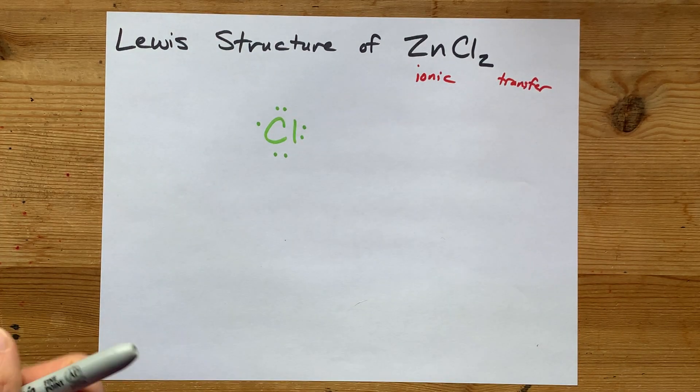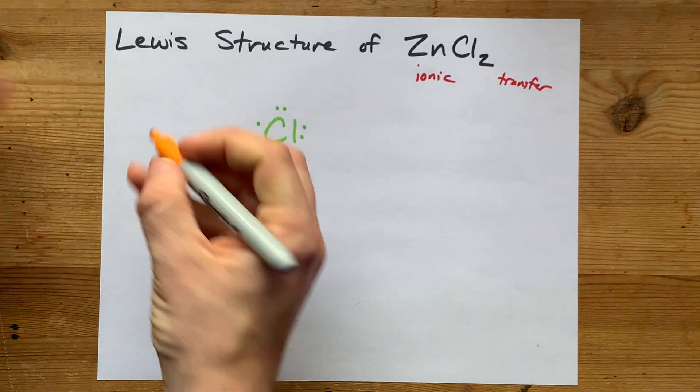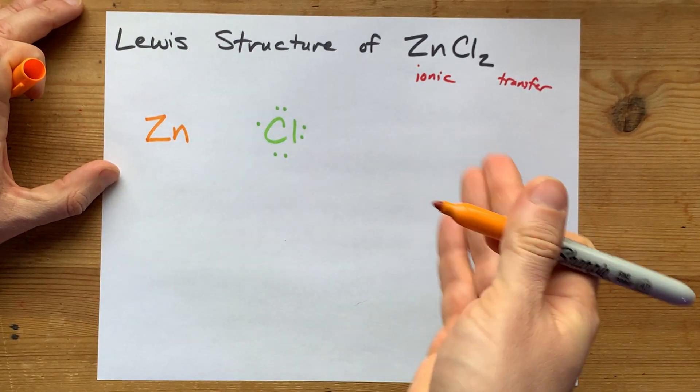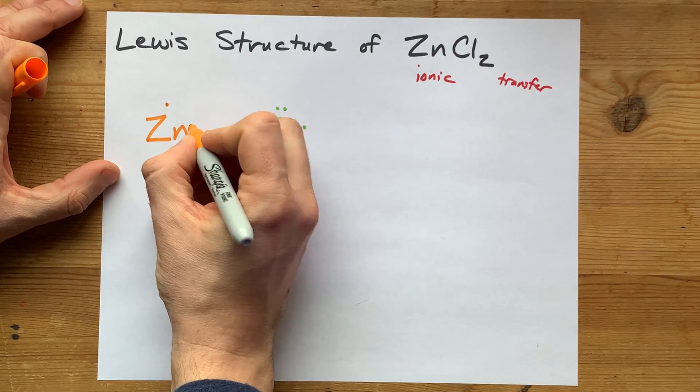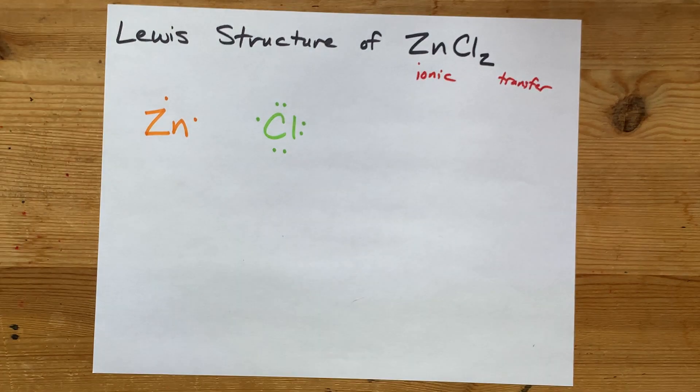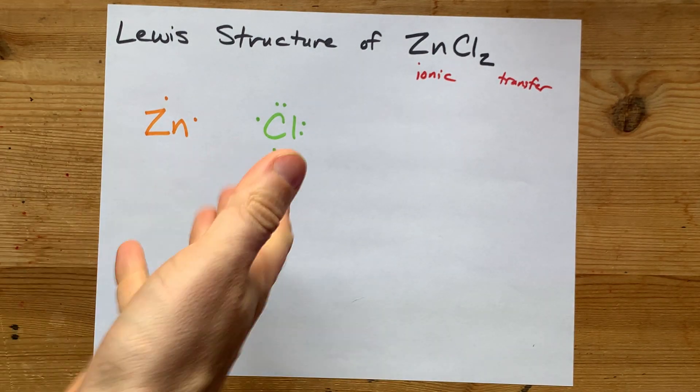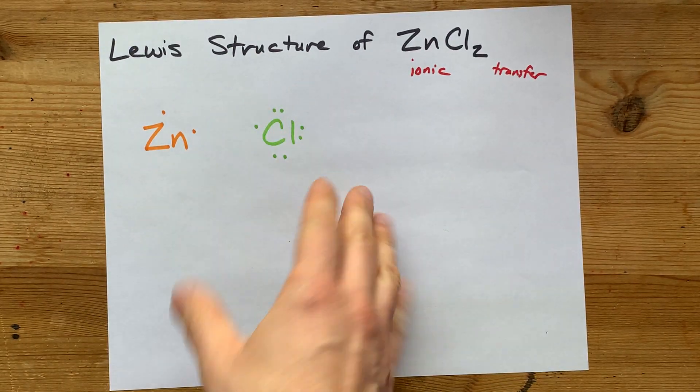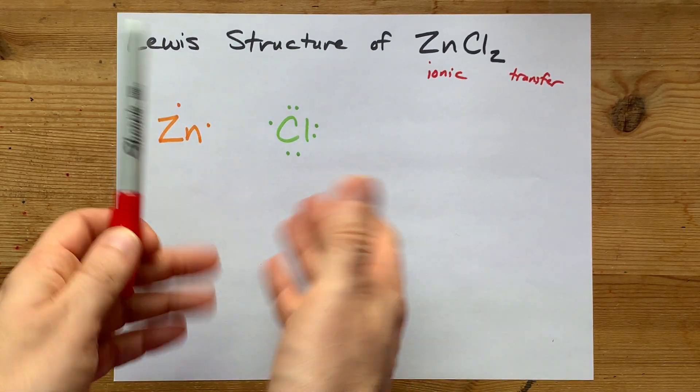What I want you to do, because you know it wants a charge of plus two, is just give it two valence electrons. That's just the start of it though. I'm motivating how this Lewis structure comes into existence.